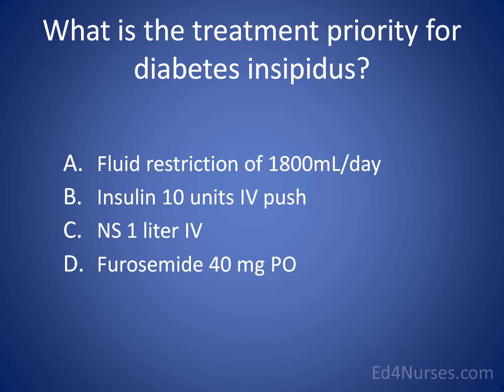What is the treatment priority for diabetes insipidus? The answer is C — give fluids. This patient is inappropriately dumping fluids and becoming dehydrated. The serum sodium will be high, so you might hesitate about normal saline, but you don't want to give too much free water either, as that could end up in the brain.